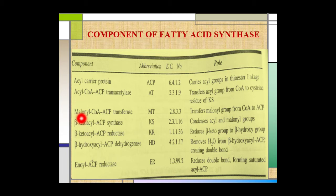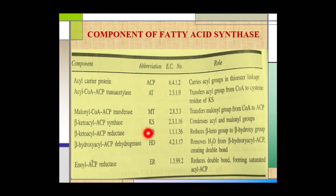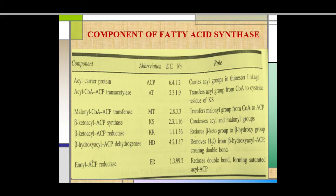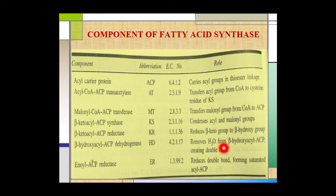The fifth component is beta-keto acyl acid reductase, abbreviated as KR. This component reduces the beta-keto group to a beta-hydroxy group. The sixth component is beta-hydroxy acyl ACP dehydratase, abbreviated as HD, which removes a water molecule from beta-hydroxy acyl ACP, creating a double bond. The seventh and last component is enoyl ACP reductase, abbreviated as ER, which reduces the double bond, forming saturated acyl ACP.